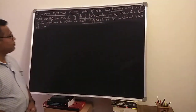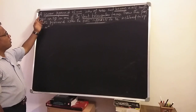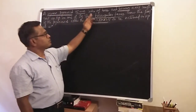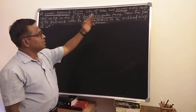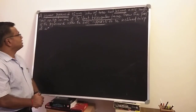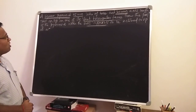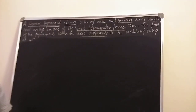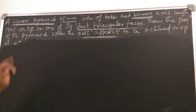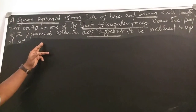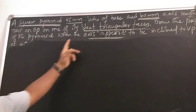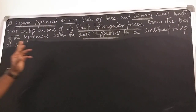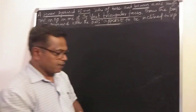The problem is: a square pyramid, 35mm side of the base and 60mm axis length, rests on HP on one of its triangular faces. Draw the projection of the pyramid when the axis appears to be inclined to VP at an angle of 45 degrees.